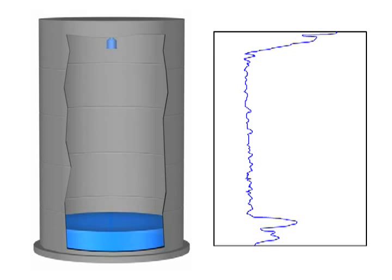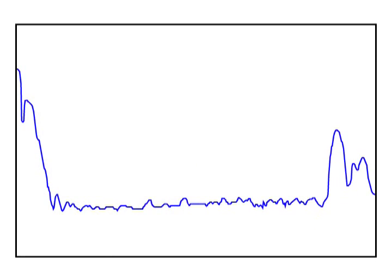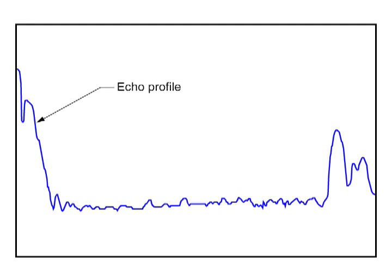The graph is called the echo profile. What does an echo profile tell us? The blue line is the echo profile. It is a graphical representation of a digital signal.